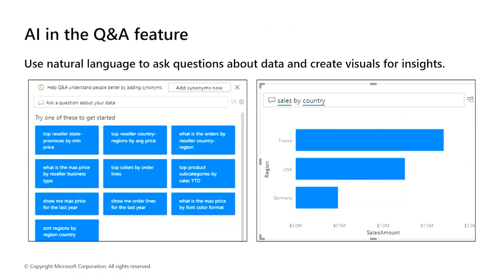The Q&A feature in Power BI lets us explore the data in our own words, using natural language processing to understand and provide answers with visuals. This ability to ask questions is valuable to both report authors and report users. It suggests ideas for the type of visuals to display and quickly adds those visuals. It gives report users an effective tool to get quick answers to questions about the data independently. This self-help aspect saves time for everyone involved. Power BI records the questions asked, and this information can be used to set up the Q&A feature to be more effective.